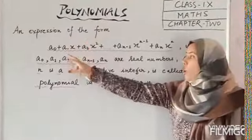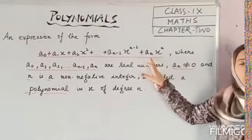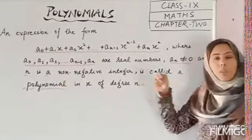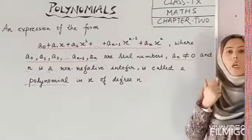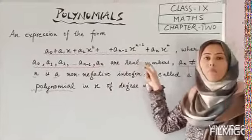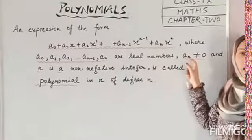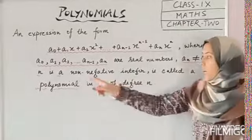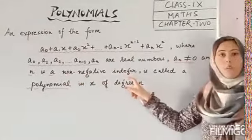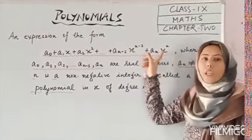Let's start with the polynomial in one variable. Polynomials are expressions in the form of a0 + a1·x + a2·x² + ... + aₙ·xⁿ, where a1, a2, a3 are constants — they are real numbers. Real number means both rational and irrational. And aₙ is not equal to 0, and n is a non-negative integer. This expression is a polynomial in x of degree n.